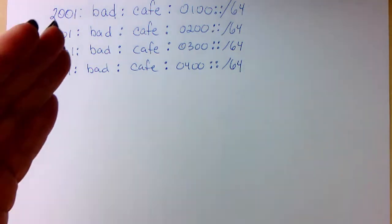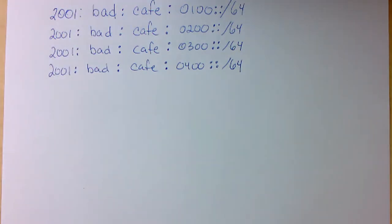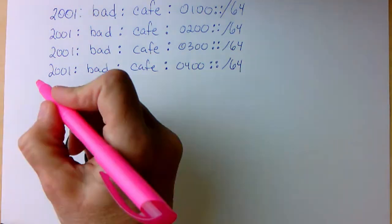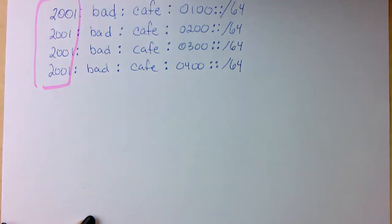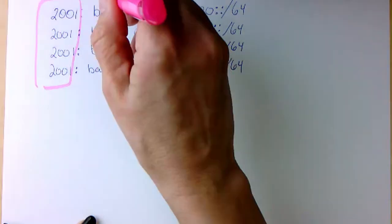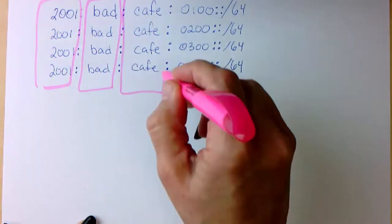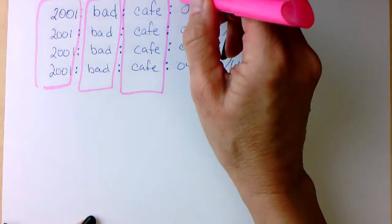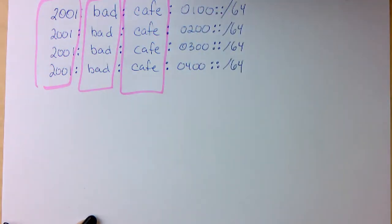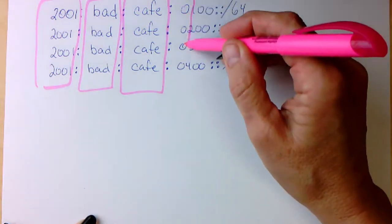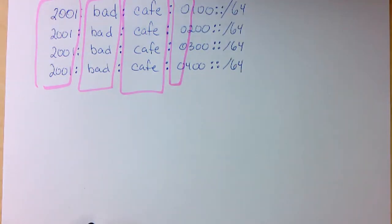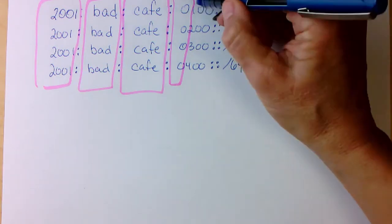The 2001:bad:cafe:0100, 0200, 0300, 0400. What we want to do is see what these addresses have in common, what they share. We can see they share the 2001, the bad, and the cafe. Now here in this fourth hextet we see a change. The zeros are all in common but what we're looking at is this second nibble area. This is where there's a difference.